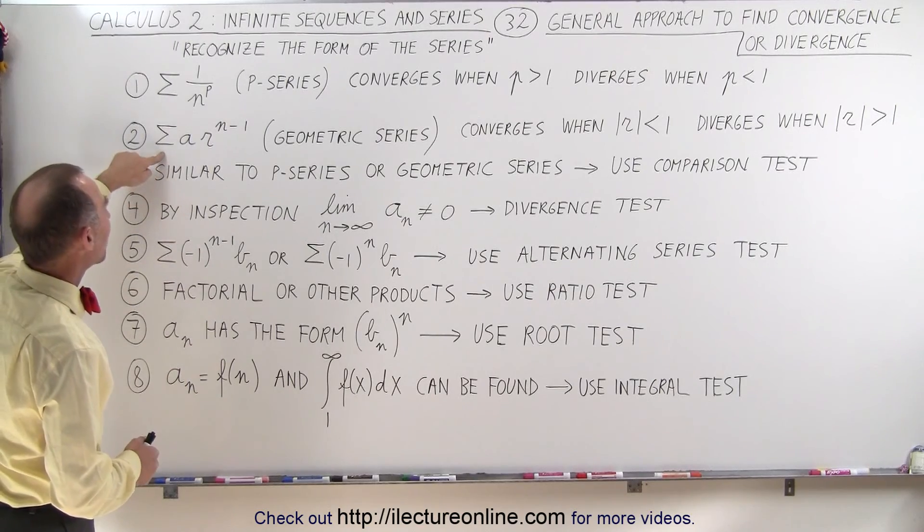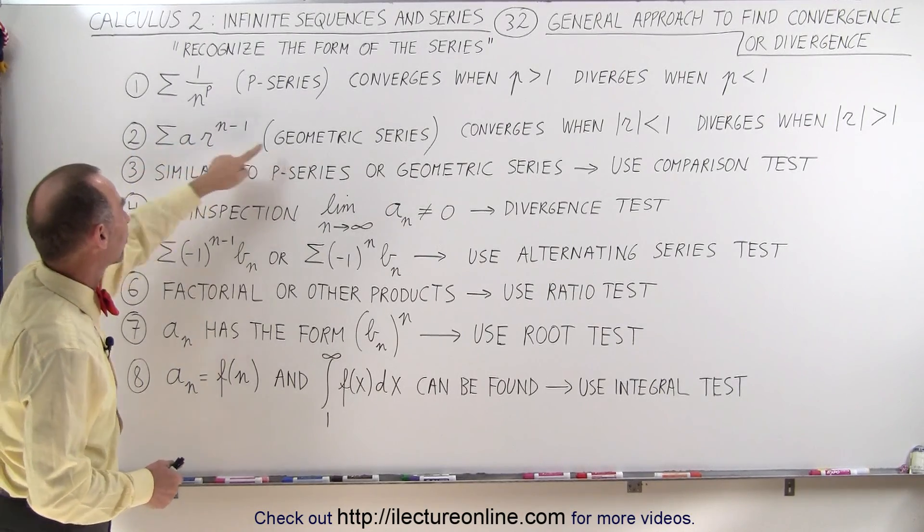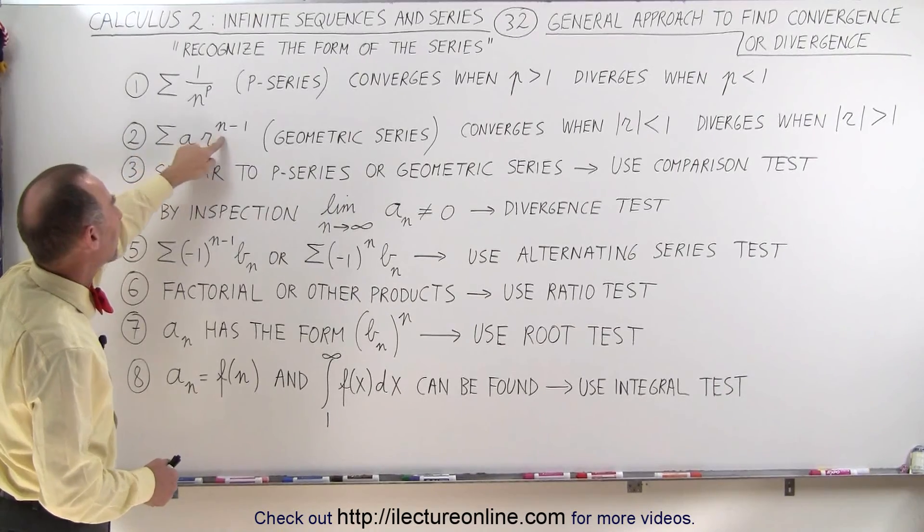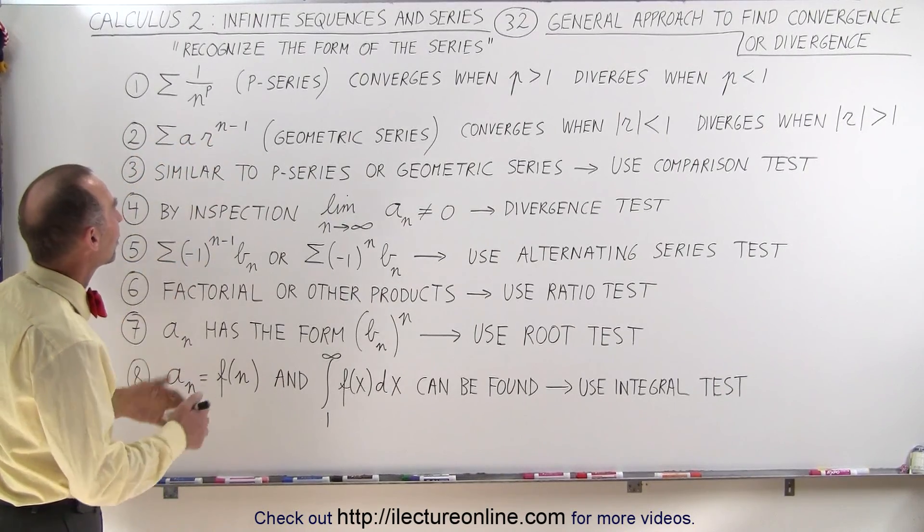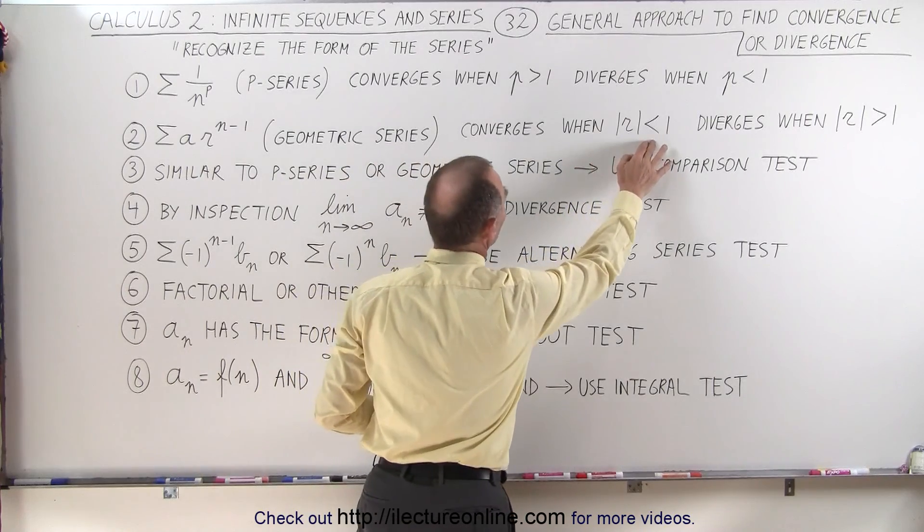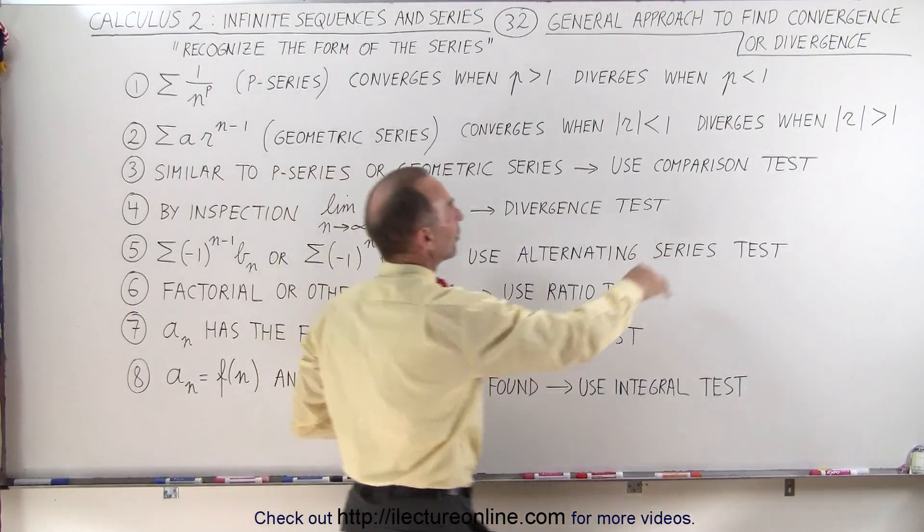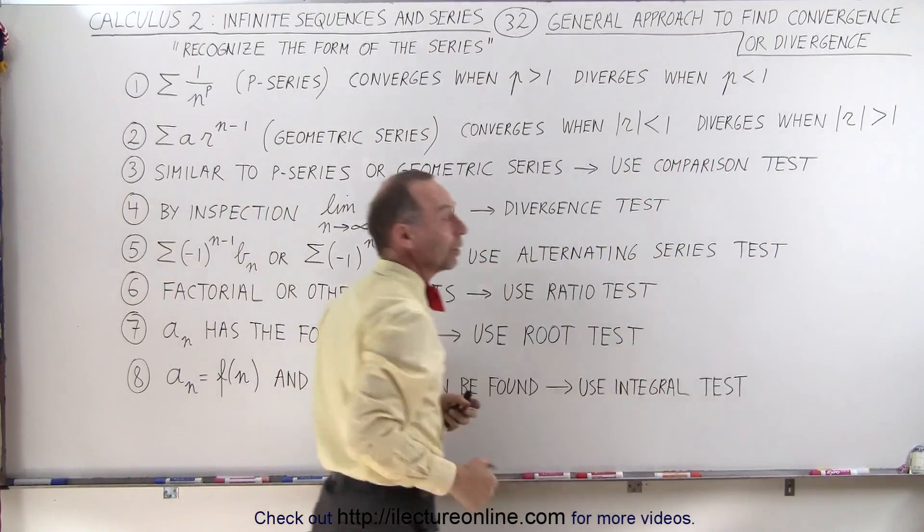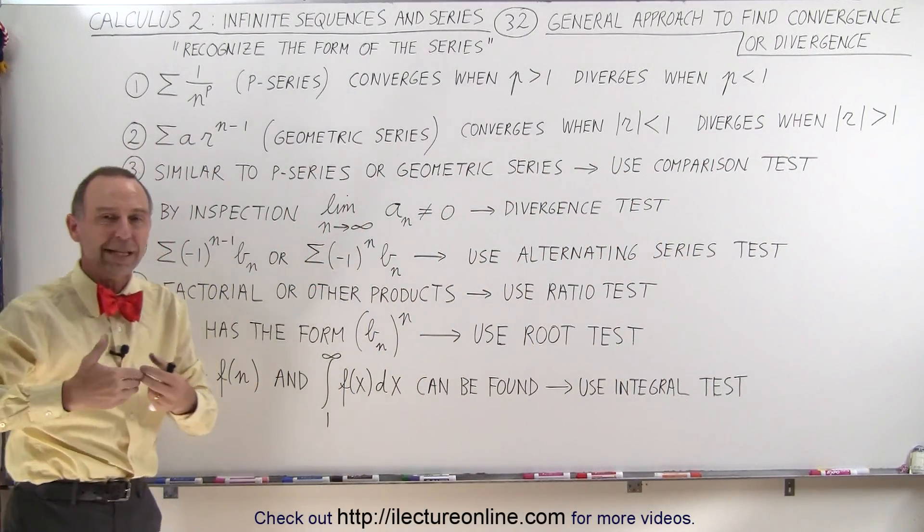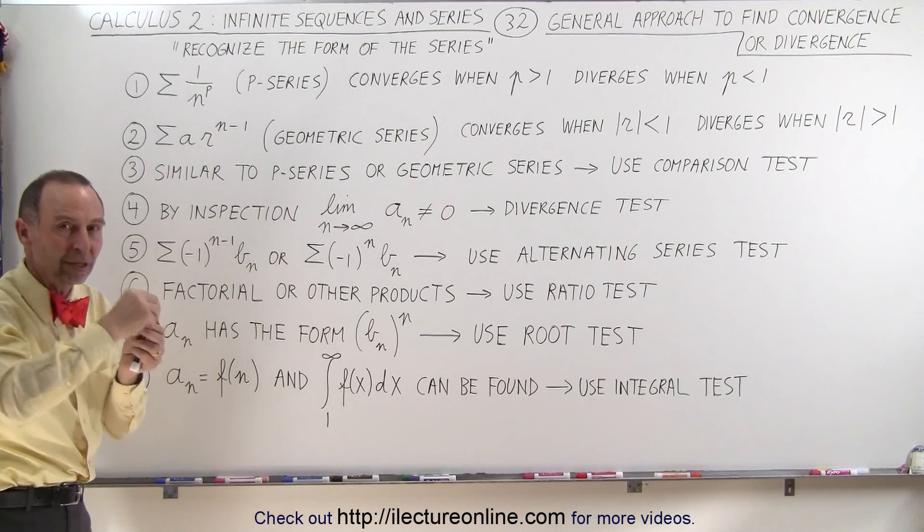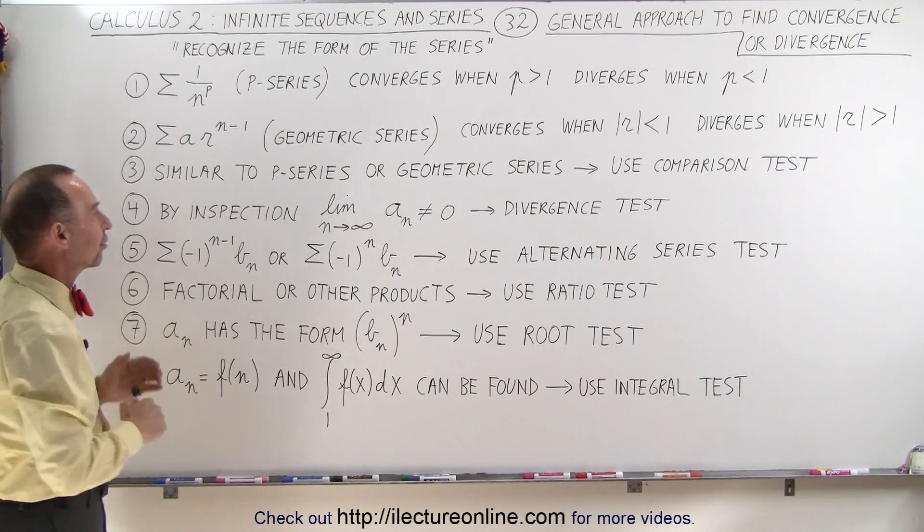The second type is when we have what we call the geometric series. We have a constant times r to the n minus 1, and then we realize that this converges when r is less than 1. Now r is the common ratio and it'll diverge when r is greater than 1, when the common ratio is greater than 1, meaning that every consecutive term becomes bigger and bigger compared to the previous term.